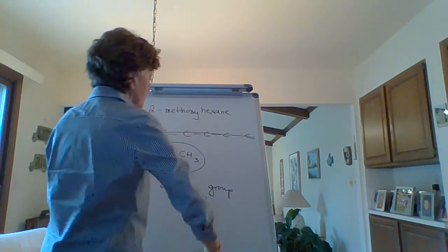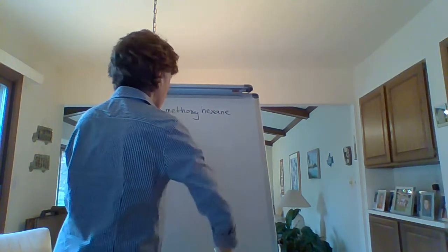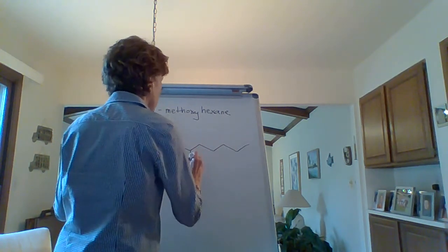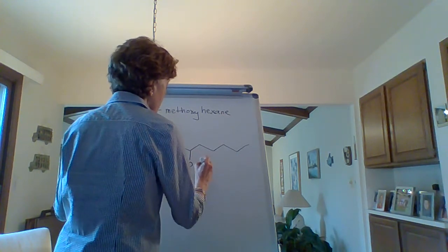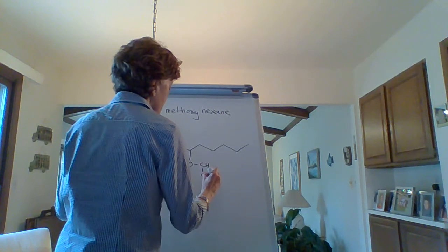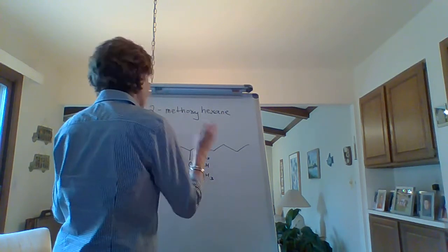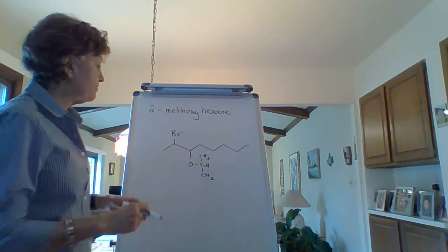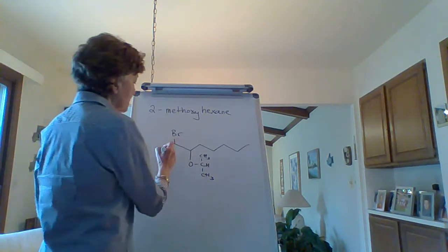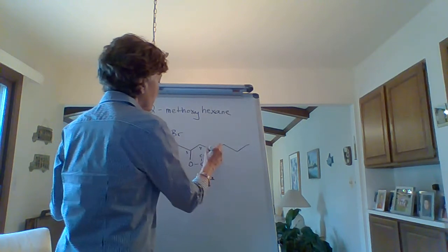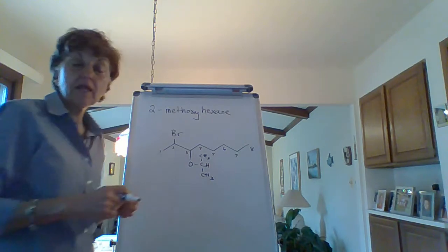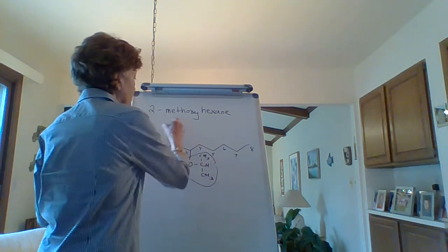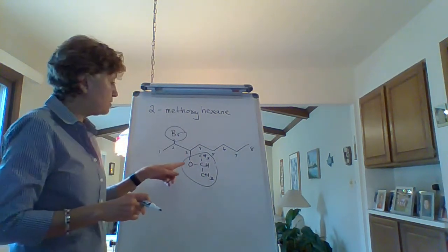Let's try another one. You recognize that the longest parent chain is 1, 2, 3, 4, 5, 6, 7, 8, so it's octane. This is a substituent and this is a substituent. What is this substituent?